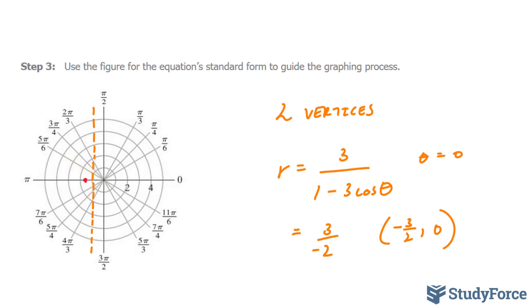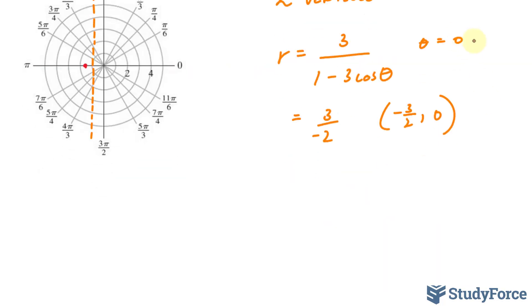And to find the next vertex, I'll substitute theta equals pi this time. Now remember what cosine looks like. The wave looks like this. And at pi, halfway through, we have negative 1. So we have 3 over 1 minus 3 times negative 1. Negative 3 times negative 1 is positive 3. So we have 3 over 1 plus 3. That's 3 over 4.